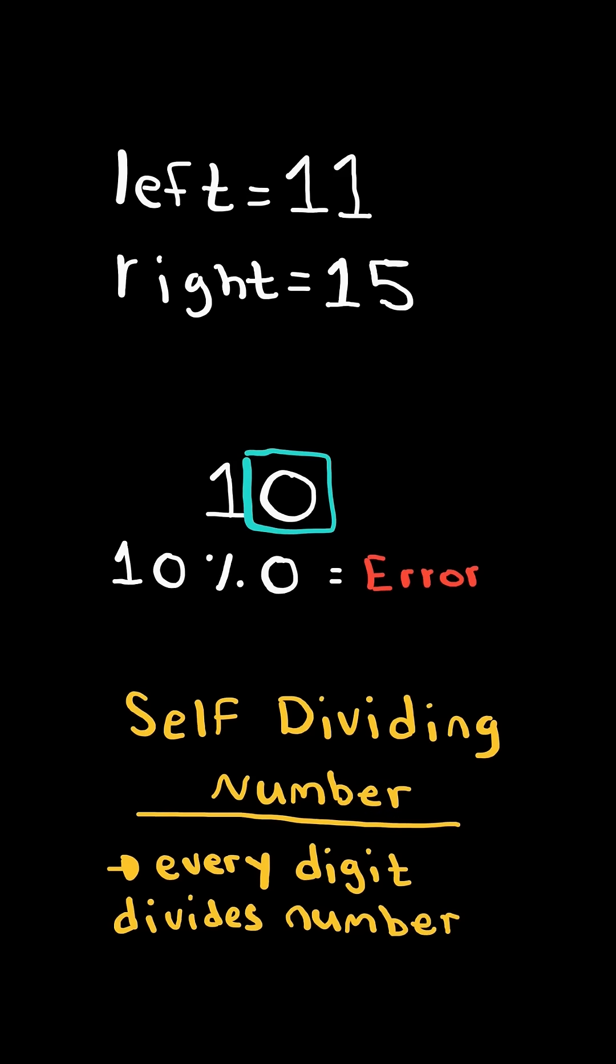Given a left and right integer, return a list of all the self-dividing numbers within the inclusive range.